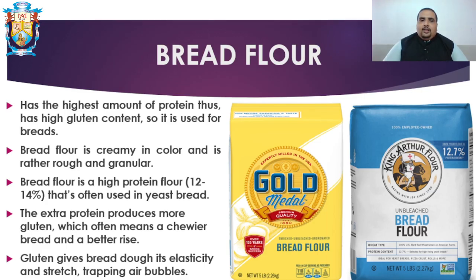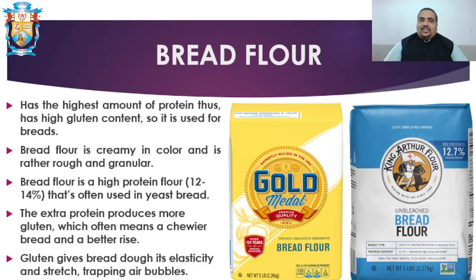The extra protein in bread flour produces more gluten, which often means a chewier bread and a better rise. If there is less gluten, the bread can break open when it rises; with more gluten, it will not. Gluten gives bread dough its elasticity and stretch, trapping air bubbles.